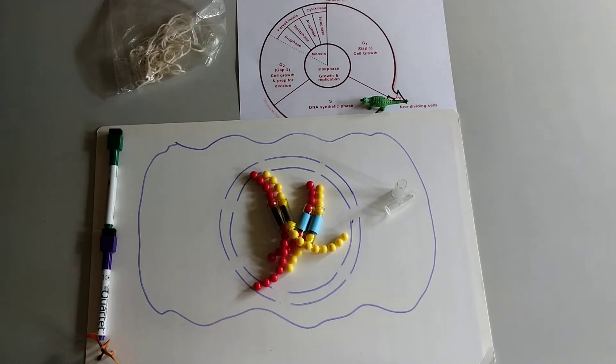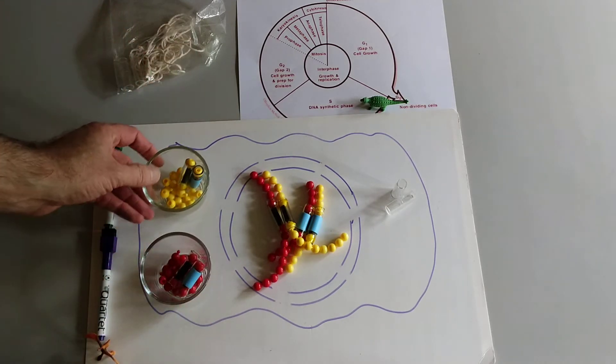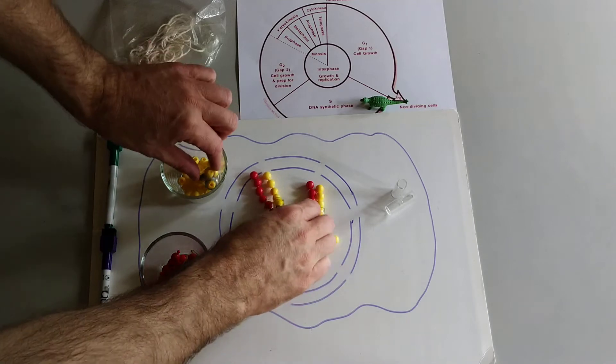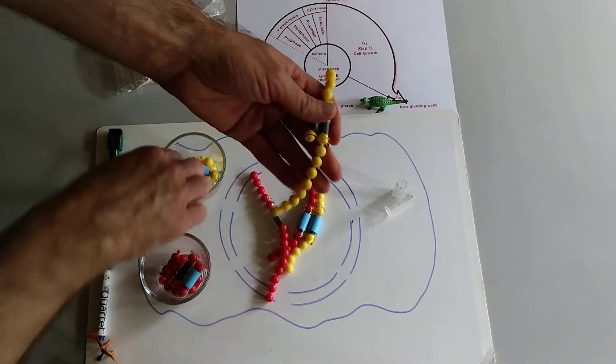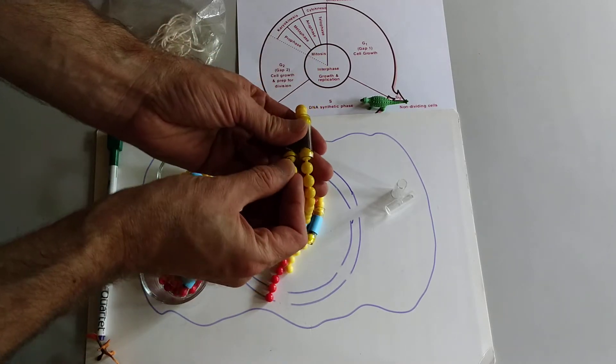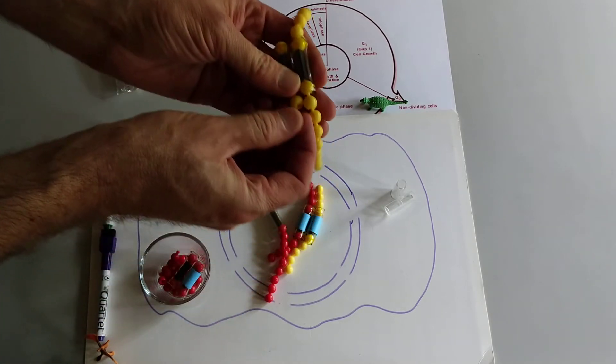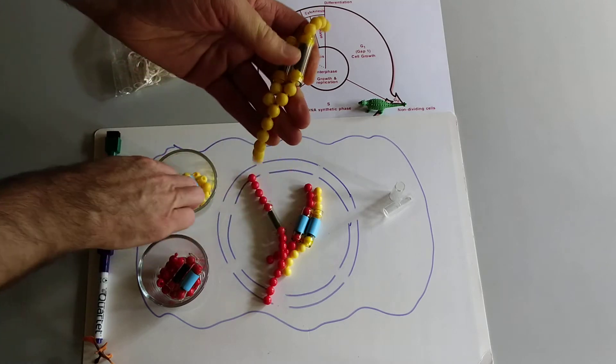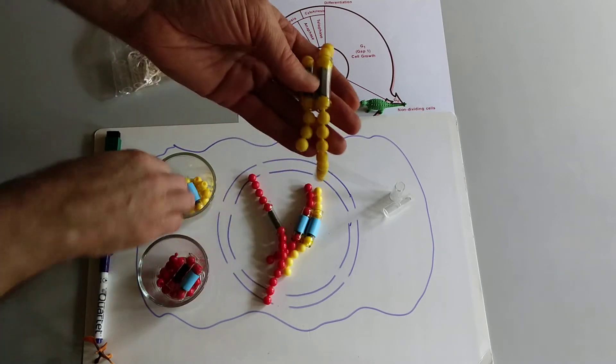And when the cell enters the DNA synthesis stage, it starts to copy the DNA. So some materials need to be brought in from outside the cell. And each chromosome is replicated. And this all happens inside the nucleus. So the centromere is replicated. And then gene for gene, base for base, the DNA gets copied.